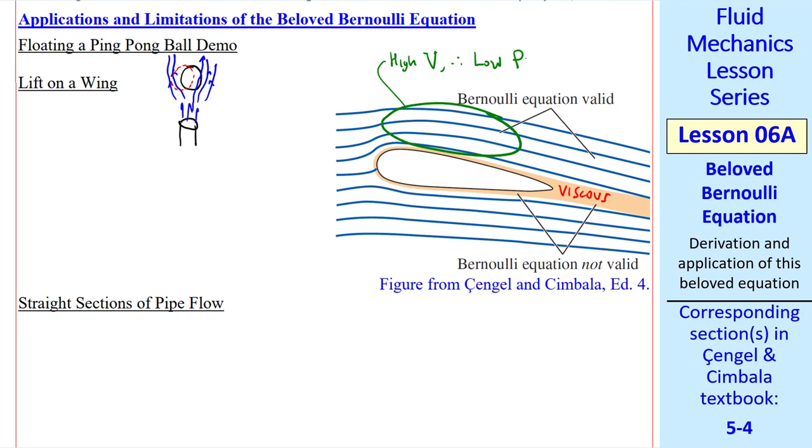On the top of the wing, we have high speed, therefore low pressure. Here, for an airplane wing in air, we ignore elevation effects, and you can see that when V is high, P is low.